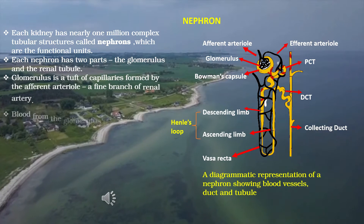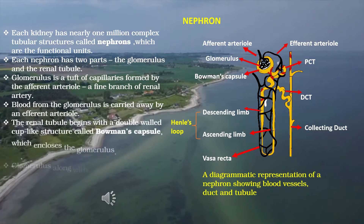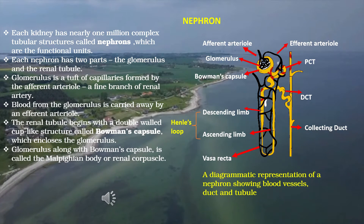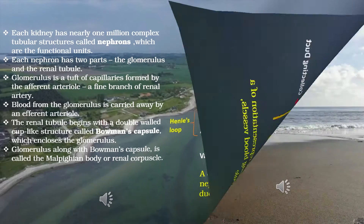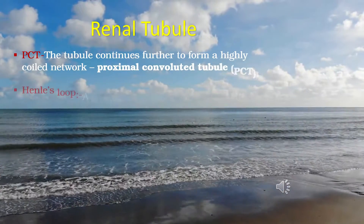Each kidney has nearly one million complex tubular structures called nephrons, which are the functional units of the kidney. Each nephron has two parts: the glomerulus and the renal tubule. The glomerulus is a tuft of capillaries formed by the afferent arteriole, a fine branch of the renal artery. Blood from the glomerulus is carried away by the efferent arteriole. The renal tubule begins with a double-walled cup-like structure called Bowman's capsule, which encloses the glomerulus. The glomerulus along with Bowman's capsule is called the Malpighian body or renal corpuscle.